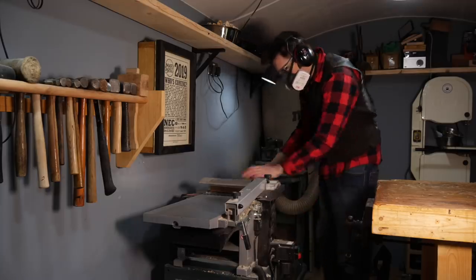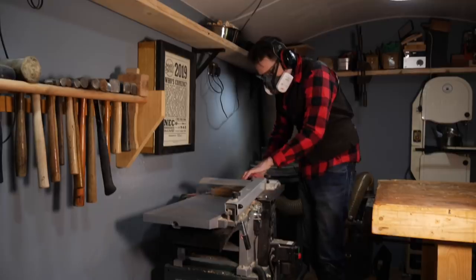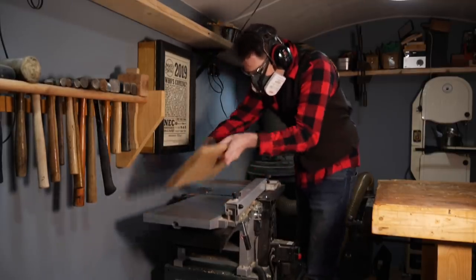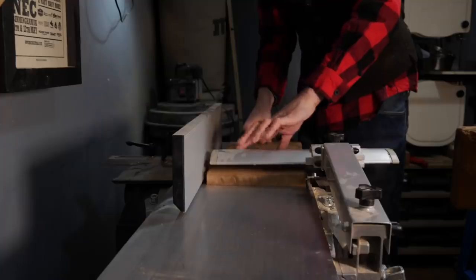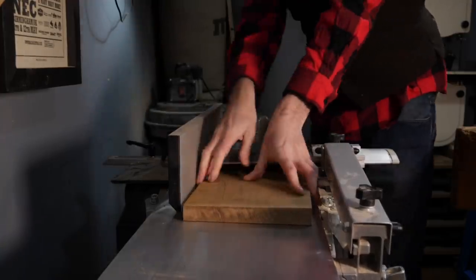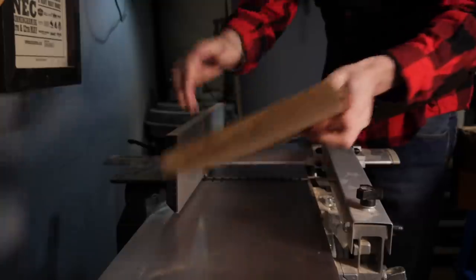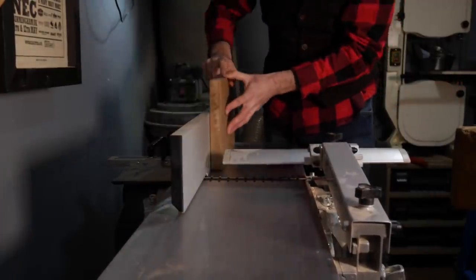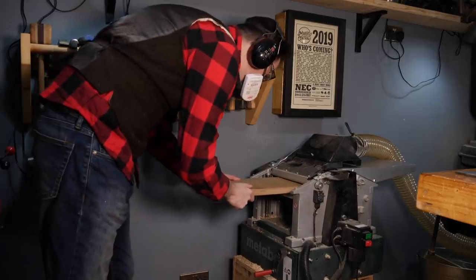I can now take it over to the planer, get one surface planed flat and then get one edge done. With the two edges done, I can reconfigure the machine and get it thicknessed down to size.